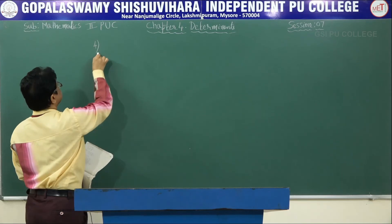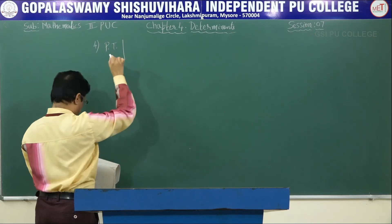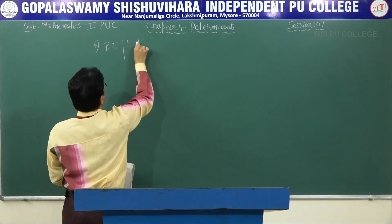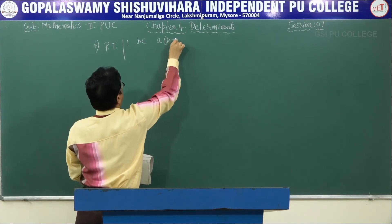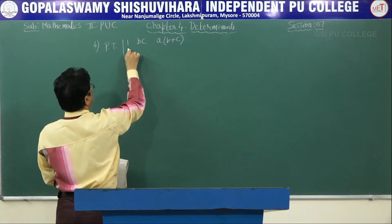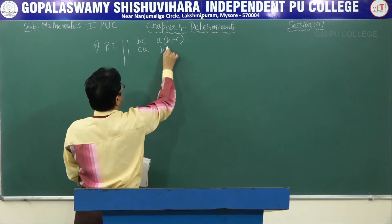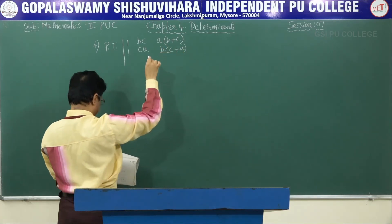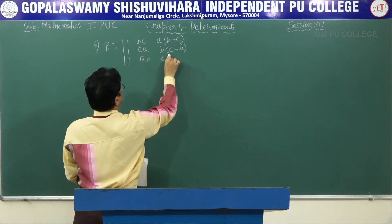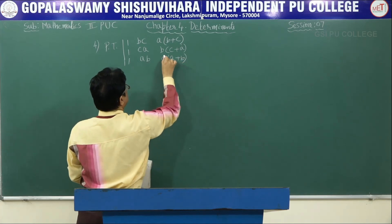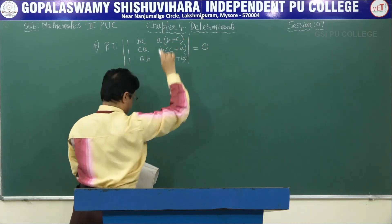Problem 4: prove that the determinant of 1, BC, A(B plus C); 1, CA, B(C plus A); 1, AB, C(A plus B) equals 0.